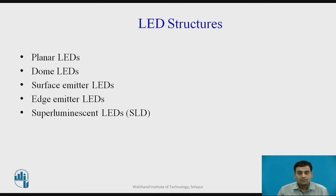There are five major types of LED structures: planar LEDs, dome LEDs, surface emitter LEDs, edge emitter LEDs, and superluminescent LEDs or SLDs. Of these five, only surface emitter LED, edge emitter LED, and superluminescent LED have found extensive use in optical fiber communications, as they are highly intense, efficient, and reliable. The other two — planar LED and dome LED — find more applications as cheap plastic encapsulated visible devices for intruder alarms, TV channel changers, and industrial counting.